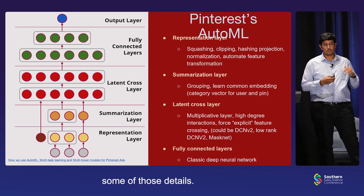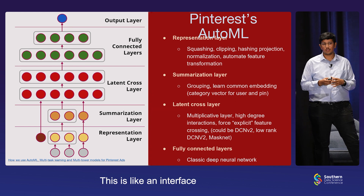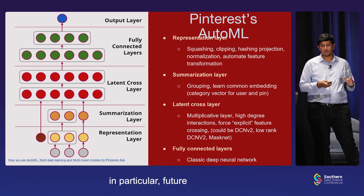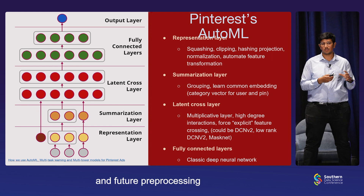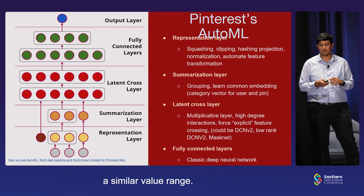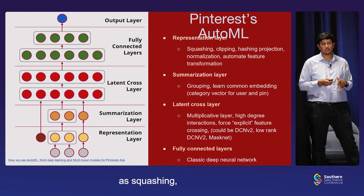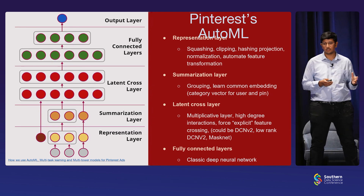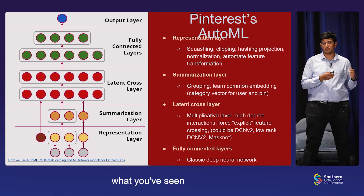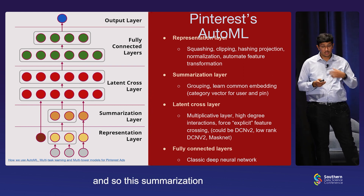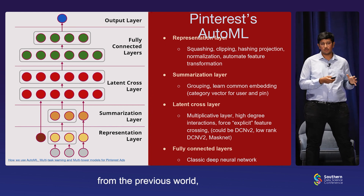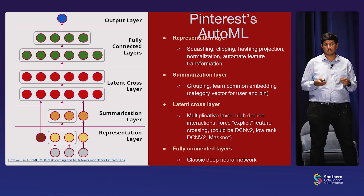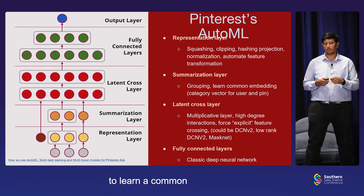The model can learn feature interactions much better than what we were doing by hand-crafting. We introduced the concept of co-learning tasks through multitasking. By doing this, we could combine the number of models we are training significantly from over 60 to like 6 models. We can combine all these predictions which are kind of similar — like click, long click, repin, or hide. This is the Pinterest AutoML architecture, which has different components. The first is the representation layer — an interface between your raw features and your model architecture. For neural networks, feature transformations and pre-processing are important to ensure features have a similar value range. For numerical features, they could be as simple as squashing, clipping, or doing log normalizations. For categorical features, they could be like projecting into a hash embedding space or learning embeddings based on vocabulary from the data.